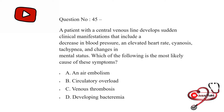A patient with a central venous line develops clinical manifestations that include decreased blood pressure, elevated heart rate, sinusitis, tachypnea, and changes in mental status. Which of the following is most likely causing the symptoms? Option first: an air embolism; second: circulatory overload; third: venous thrombosis; last: developing bacteremia. The correct answer is an air embolism.